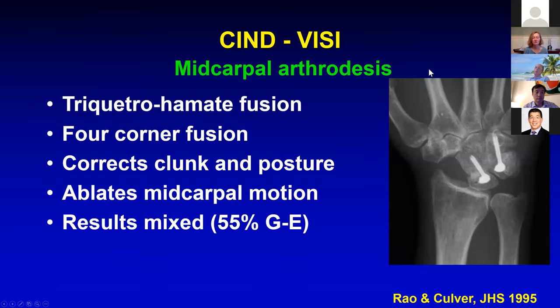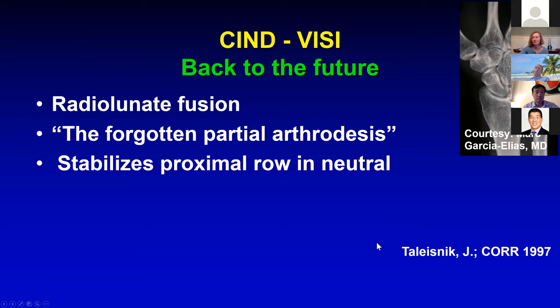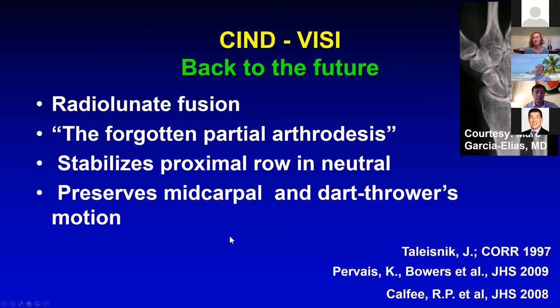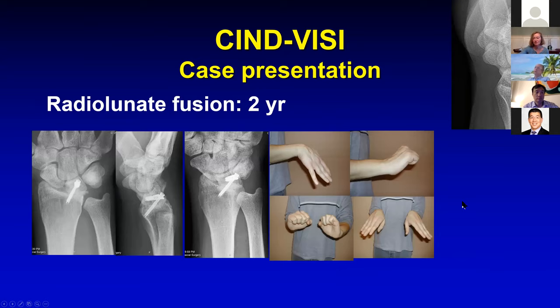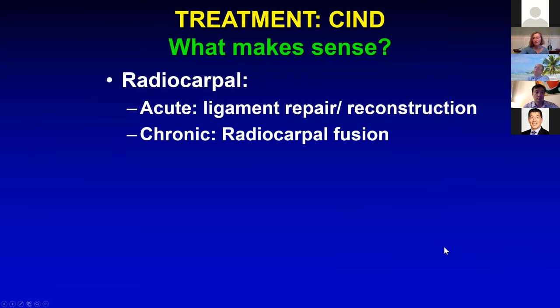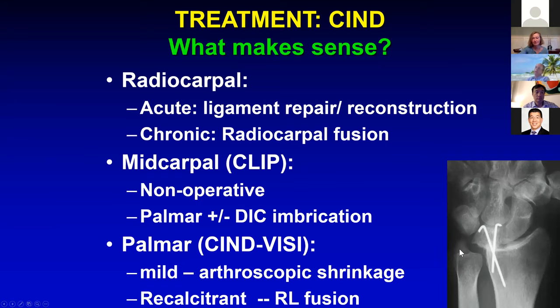The radiolunate fusion is probably my go-to procedure for severe proximal carpal row instabilities — it stabilizes the proximal carpal row in neutral but preserves the mid-carpal joint. Take off the distal scaphoid or take out the triquetrum if you like, but preserve the mid-carpal joint to get more motion. In summary: for radiocarpal CIND, acutely repair with ligament reconstruction; chronically, radiocarpal fusion. For mid-carpal instability — very rare — treat almost always non-operatively. For CIND-VISI, arthroscopic shrinkage is effective for recalcitrant patients. Radiolunate fusion for severe proximal carpal row instability. Thank you for your attention.